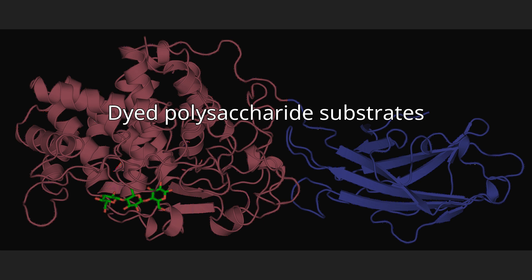Soluble chromogenic substrates: a cellulase sample is incubated with a water-soluble substrate such as Azo-CM-cellulose. The reaction is terminated and high molecular weight, partially hydrolyzed fragments are precipitated from solution with an organic solvent such as ethanol or methoxyethanol. The suspension is mixed thoroughly, centrifuged, and the color in the supernatant solution due to small soluble dyed fragments is measured. With the aid of a standard curve, the enzyme activity can be determined.